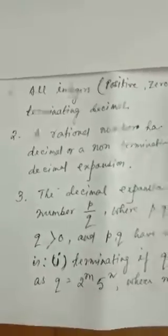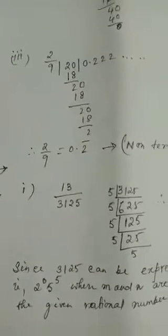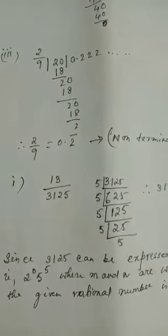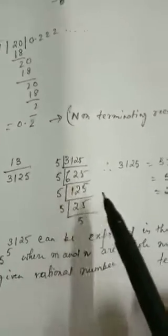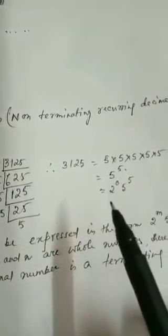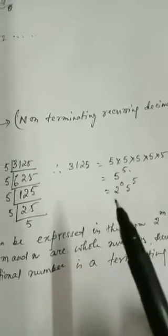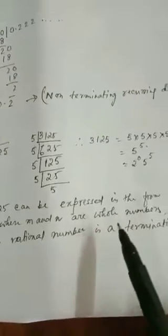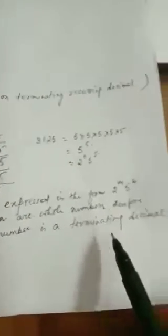Now let us see sum number 3. You have to check 13 by 3125. Find the prime factors of the denominator: 3125 equals 5 into 5 into 5 into 5 into 5, so 5 to the power 5. This can be expressed as 2 to the power 0 into 5 to the power 5, because 2 to the power 0 is equal to 1. So you can express 3125 in the form 2 to the power m into 5 to the power n, where m and n are whole numbers. Therefore the rational number is a terminating decimal.